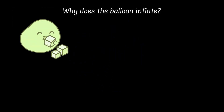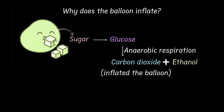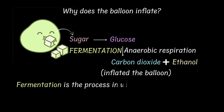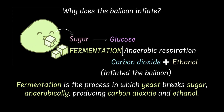What do you think made the balloon inflate? The answer is yeast. Yeast fed on sugar and broke it down into glucose. This glucose was further broken down in the process of anaerobic respiration to produce carbon dioxide alongside a small amount of ethanol. And this carbon dioxide filled the balloon and inflated it. This process is what we call fermentation — when yeast breaks down sugar anaerobically, producing carbon dioxide and ethanol.